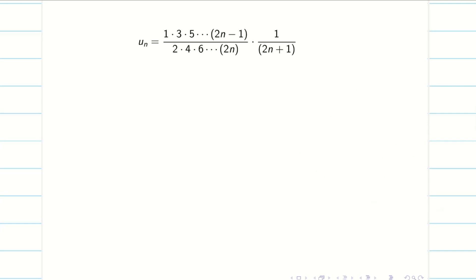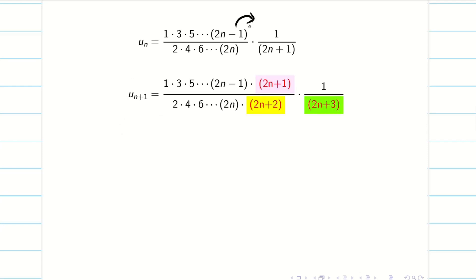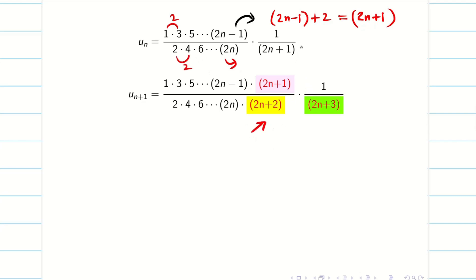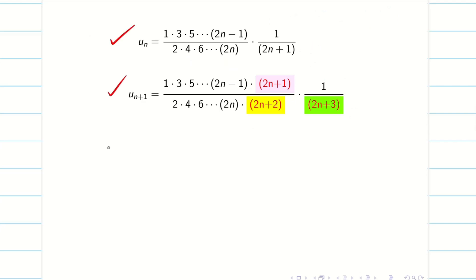The only option is to go for the ratio test. For the ratio test, we need to find u_(n+1). The next term after 2n−1 in the numerator is 2n+1 (adding 2). The next term after 2n in the green denominator is 2n+2. The next term after 2n+1 in the gray denominator is 2n+3. So u_(n+1) is ready.